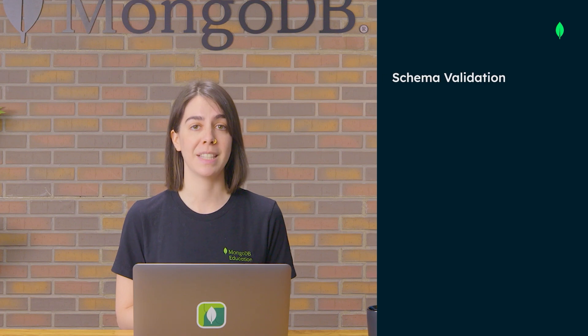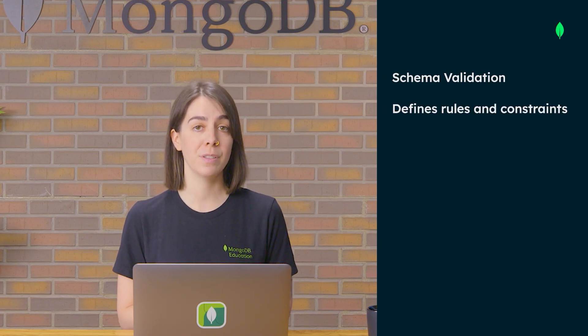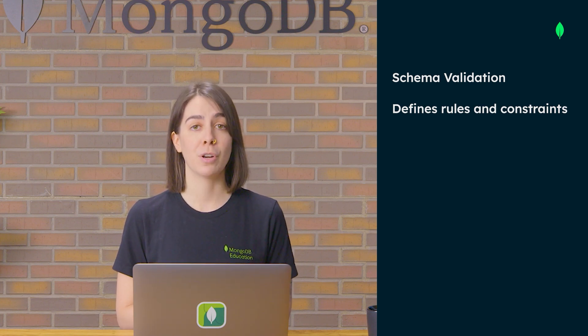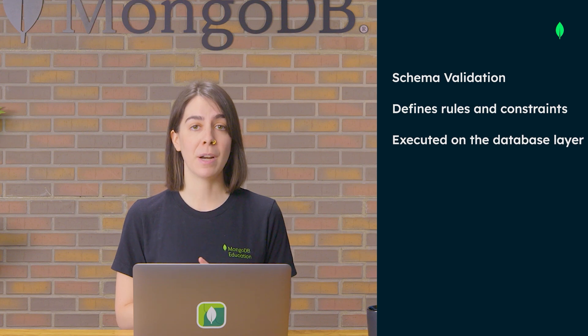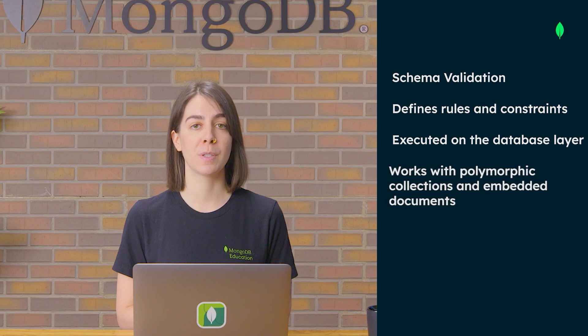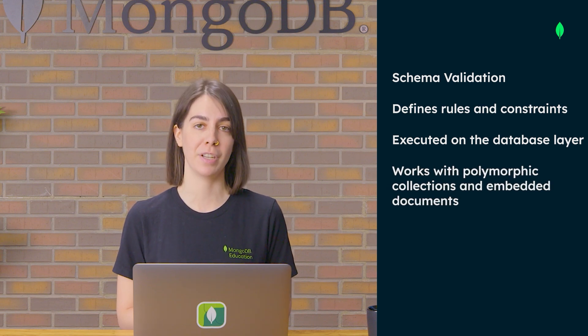Some applications require a more rigid schema to ensure consistency. MongoDB offers schema validation that's enforced by the database itself. You can define rules and constraints, much like in a relational database, to keep your data clean and consistent. The validation occurs directly in the database, no matter which application or user is accessing it. Schema validation also works with polymorphic collections and embedded documents.